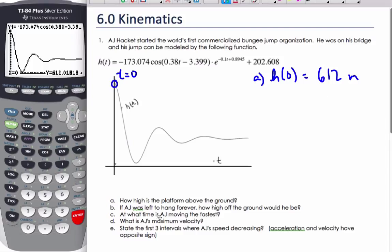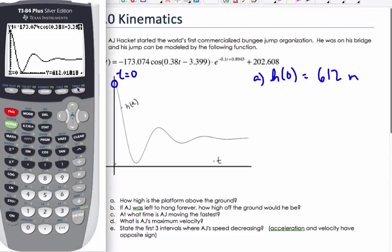Part B says if A.J. was left to hang forever, how high off the ground would he be? Well, as you notice on this graph, it goes up and down and slowly starts to level off, a limiting value here. So that's as t gets very large.